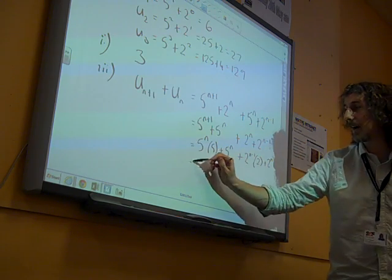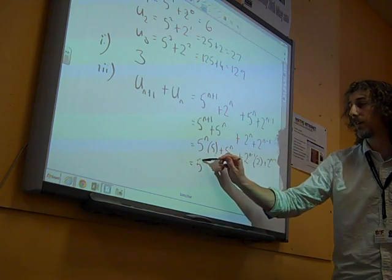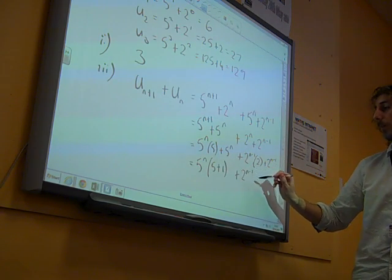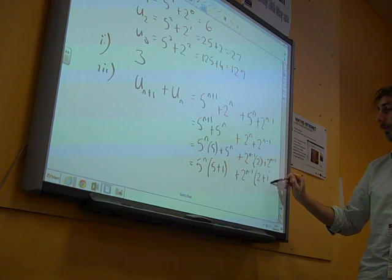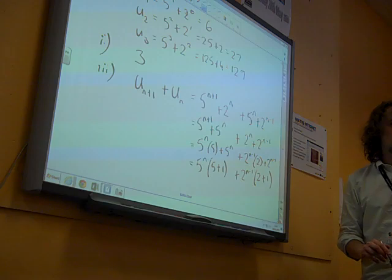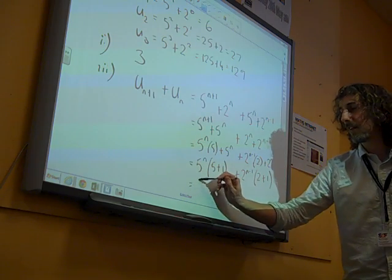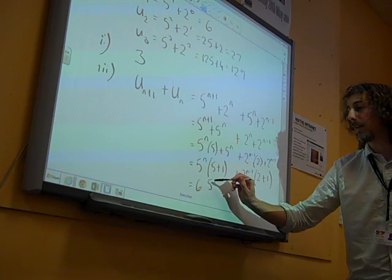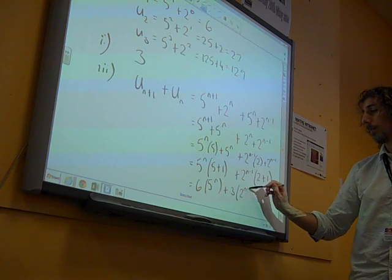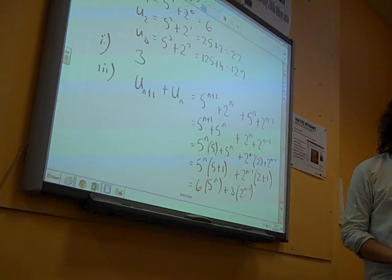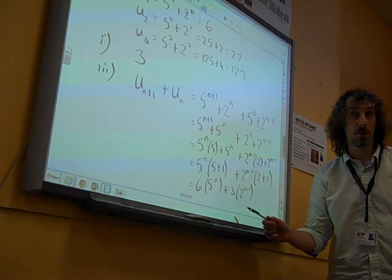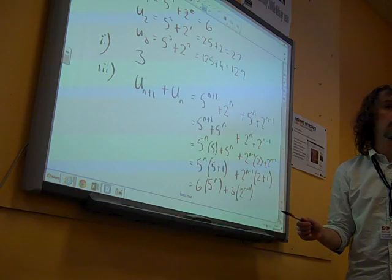And over here, I'm going to keep this as being 2 to the n minus 1. So this is 2 to the n minus 1 times 2, and this is 2 to the n minus 1. So if I take out my common factors, this is 5 to the n brackets 5 plus 1, and this is 2 to the n minus 1 brackets 2 plus 1. So we've got 6 lots of 5 to the n plus 3 lots of 2 to the n minus 1. Ah, that's interesting, because 6 and 3 are also both multiples of 3.